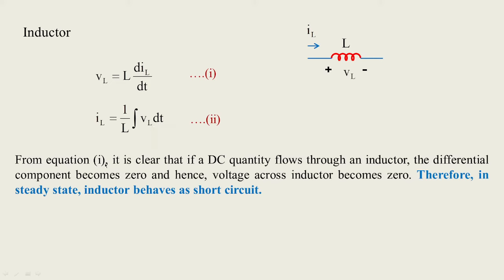From equation 1, it is clear that if a DC quantity flows through an inductor, the differential component becomes 0 and hence the voltage across the inductor becomes 0. Therefore, we can say that in steady state the inductor behaves as a short circuit. This is a very important property of the inductor.